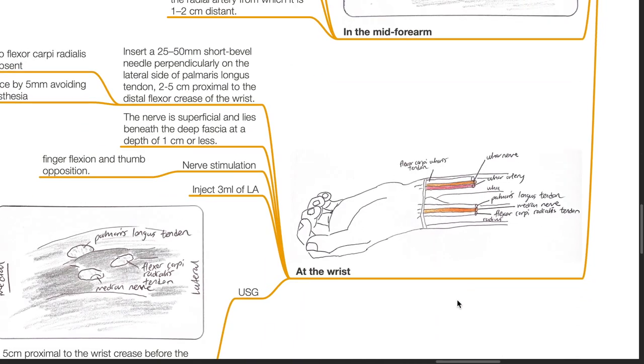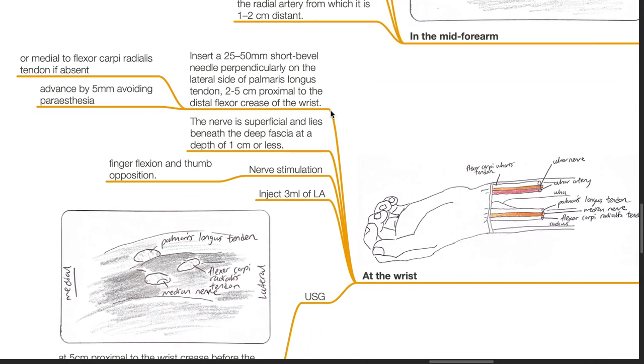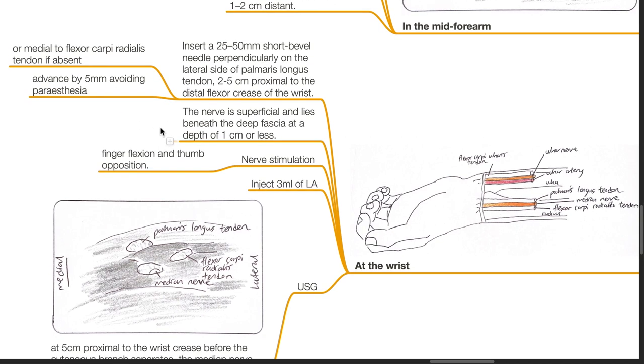At the wrist, insert a 25 to 50 mm short bevel needle perpendicularly on the lateral side of the palmaris longus tendon, 2 to 5 cm proximal to the distal flexor crease of the wrist or medial to the flexor carpi radialis tendon if it is absent. Advance by 5 mm avoiding paresthesia. The nerve is superficial and lies beneath the deep fascia at a depth of 1 cm or less. Nerve stimulation will result in finger flexion and thumb opposition. Inject 3 mL of local anesthetic.